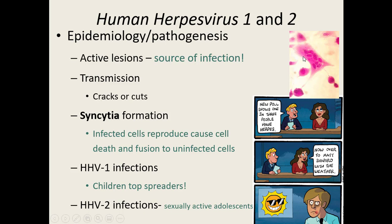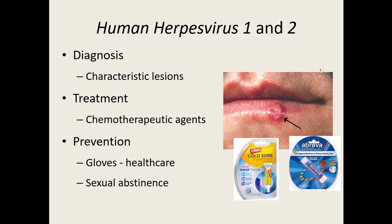HHV-1 infections are generally spread by kids, since kids are always touching everything. HHV-2 is usually spread by sexually active adolescents. Diagnosing an infection is usually done by looking at the characteristic skin lesions — you can visually see them. For a more confirmative test, they can do various antibody tests. Treatment involves different chemicals that mainly shorten how long the lesion is there; it does not make the virus go away. Once you have it, you've got it for life. We do have drugs to shorten the duration of active lesions, but they don't cure it.